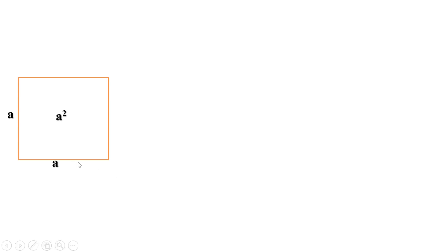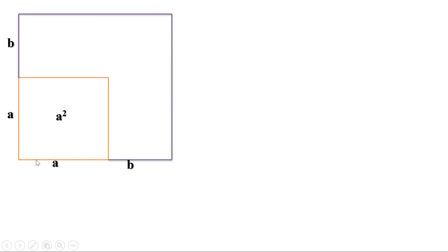Now suppose a square has side a. Its area is a × a, or a². Let us extend the length of each side by b, and draw the sides to form a large square. The side of the large square is a + b, so its area is (a + b) × (a + b), or (a + b)².